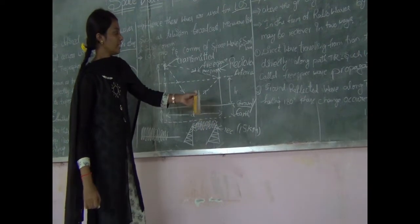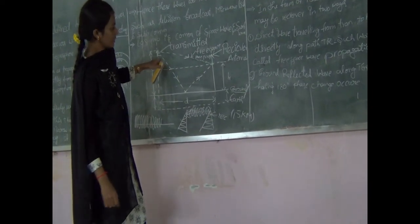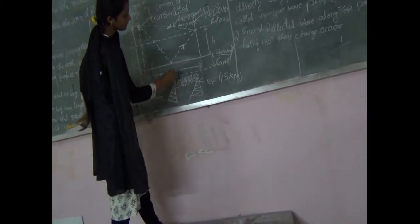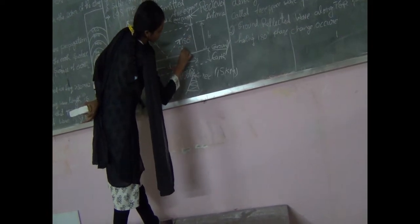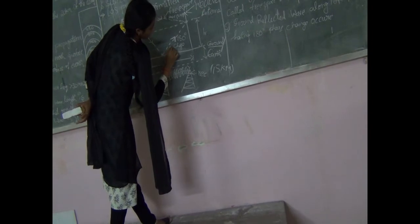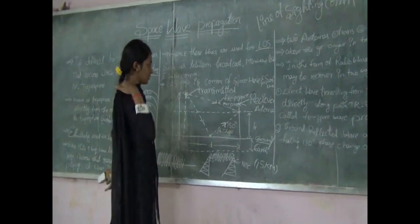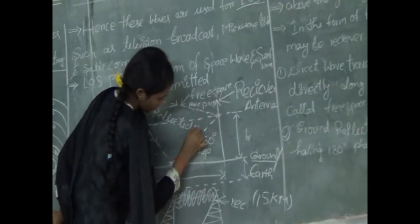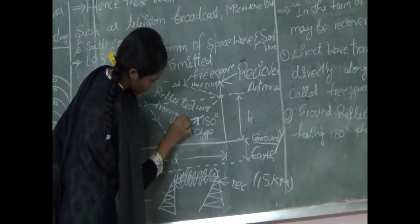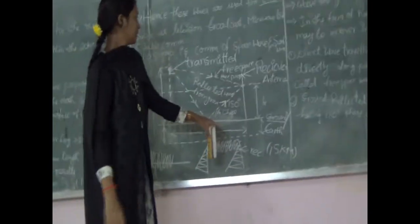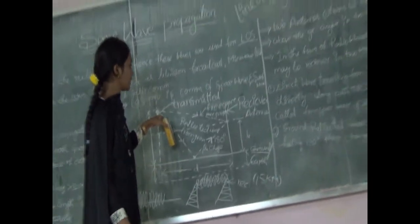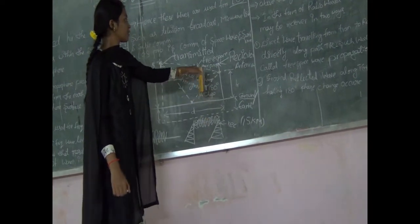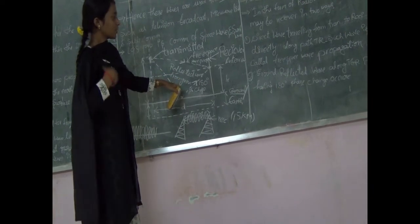The second wave is a ground reflected wave — the wave reflected from the ground along the TR path, having a 180 degree phase change after reflection. In this diagram, there are two waves: one directed from the transmitter to the receiver, and another reflected from the ground to the receiver. The first is called free space wave propagation and the second is called reflected wave propagation.